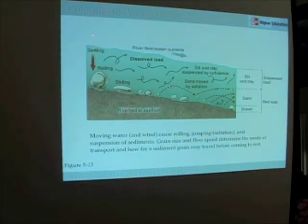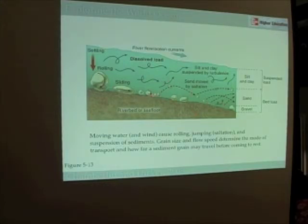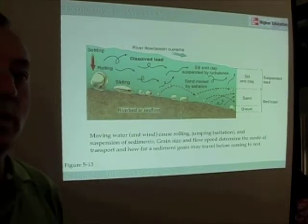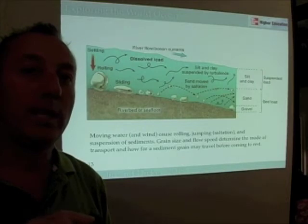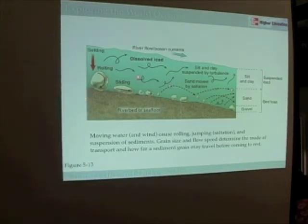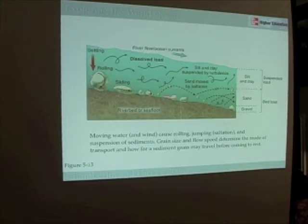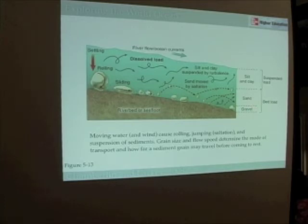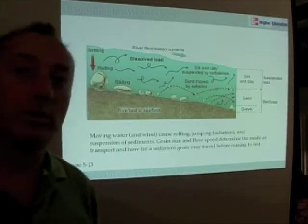As sediments are deposited — and this could be in a river or an ocean current — they may roll, they may slide, they may tumble, they may hop, a process called saltation. There are some really good websites; if you look up sediment saltation in Google, there are some nice images of saltation happening. Sediments may also be suspended and carried away. The kinds of sediments that might be rolled or slid by moving water are going to be larger particle sizes like gravels. Saltation and suspension are going to be in the smaller size classes. So through the process of moving water or winds, particles sort out according to their size.